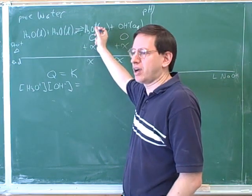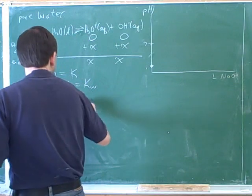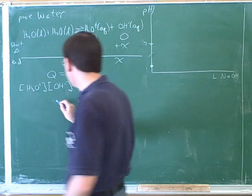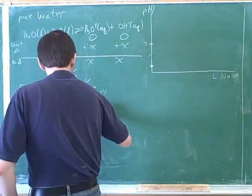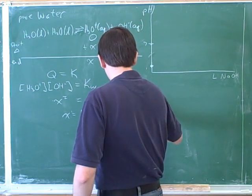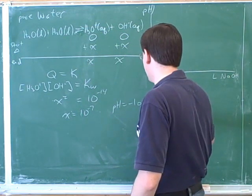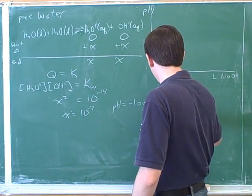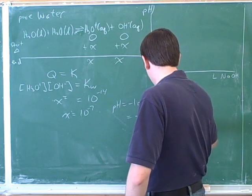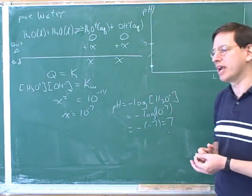What is the KW? It's just the equilibrium constant for this reaction. 10 to the negative 14. That's right. So that's our next step, to put in 10 to the negative 14. So X squared equals 10 to the negative 14. So X equals 10 to the negative 7. So then the pH would be the negative log. Now X here is the hydronium concentration. So the hydronium concentration is negative log of 10 to the negative 7, which is negative negative 7, which is 7.